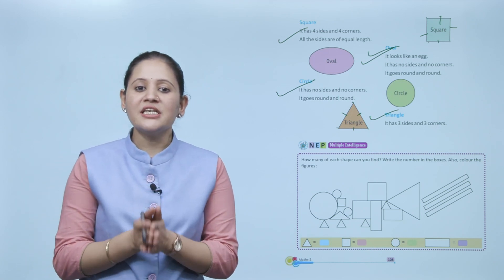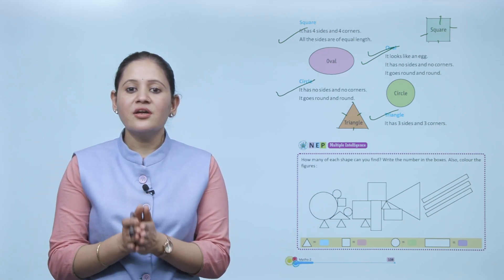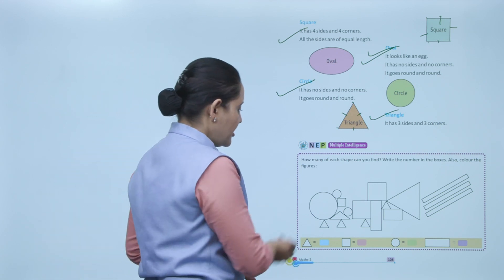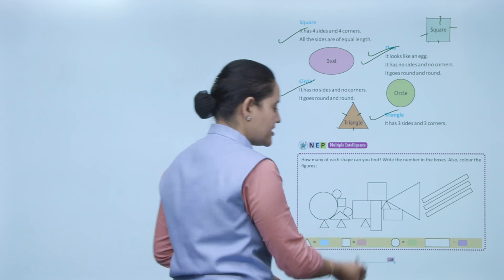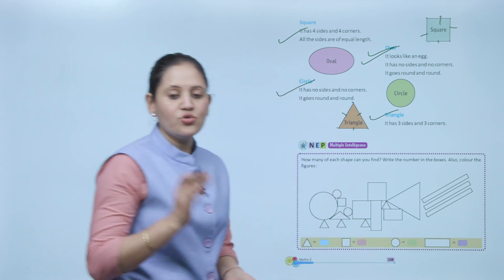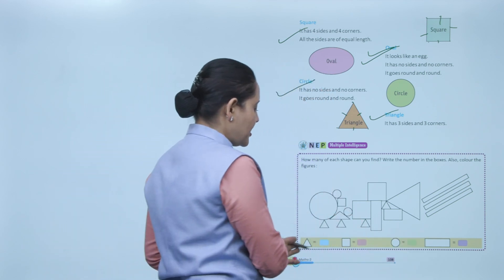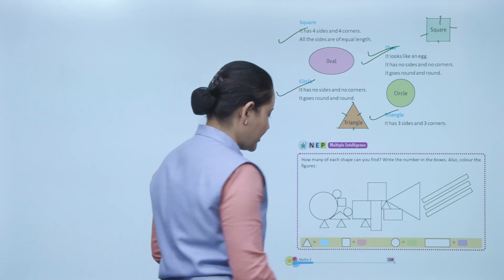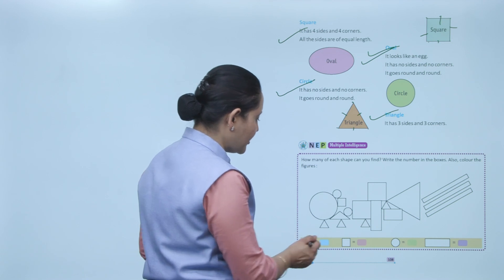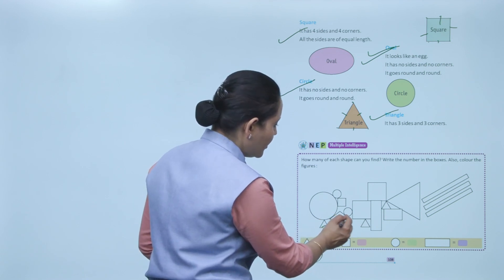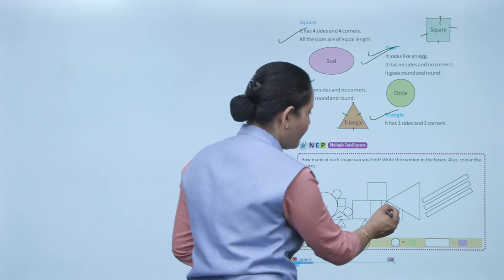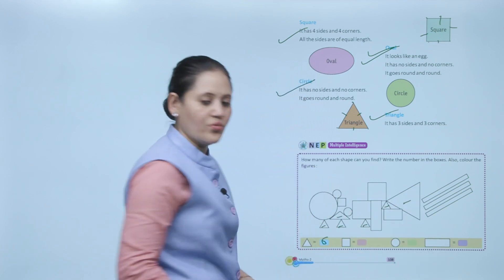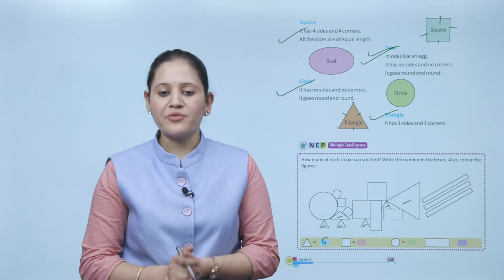Multiple intelligence activity: how many of each shape can you find? Write the number in the boxes and also color the figure. Here different shapes are given — triangle, square, circle, and rectangle. Count each shape and write the number and color it. For example, triangles: one, two, three, four, five, six — total six — and color it blue.